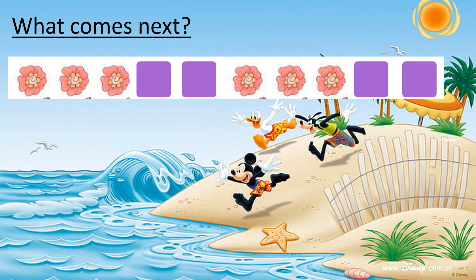What comes next? In this pattern we have three flowers and then two purple squares. This pattern repeats itself. At the end of this pattern we can see that there is a purple square — we need to find out what comes next. If you look back, you can see that next to the purple square is a pink flower, so the pink flower comes next.